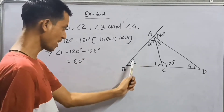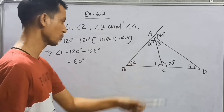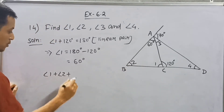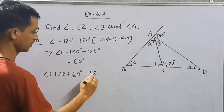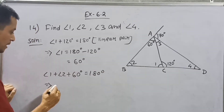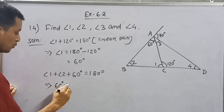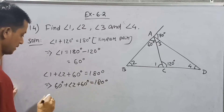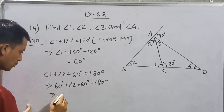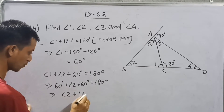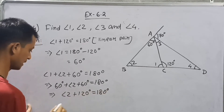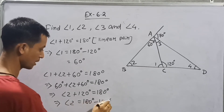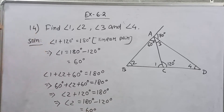In this triangle, Angle 1 plus Angle 2 plus 60 degrees is equal to 180 degrees. Angle 1 is 60 degrees, Angle 2 we have to find, and the given angle is 60 degrees. So 60 plus 60 plus Angle 2 equals 180, meaning Angle 2 plus 120 degrees equals 180 degrees. Therefore Angle 2 is equal to 180 degrees minus 120 degrees, which is 60 degrees.